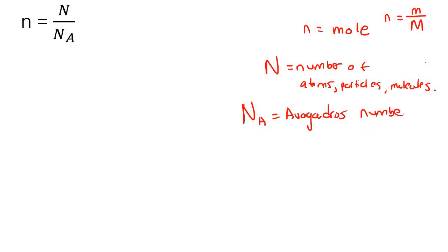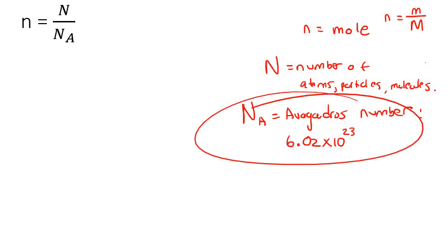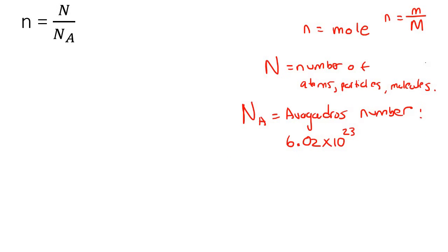This number is one that you will be given in your tests or exams. It is 6.02 multiplied by 10 to the exponent 23. That is a number you're going to use quite a bit, but they will give it to you in your exams — like a table where you've got all these constant values.